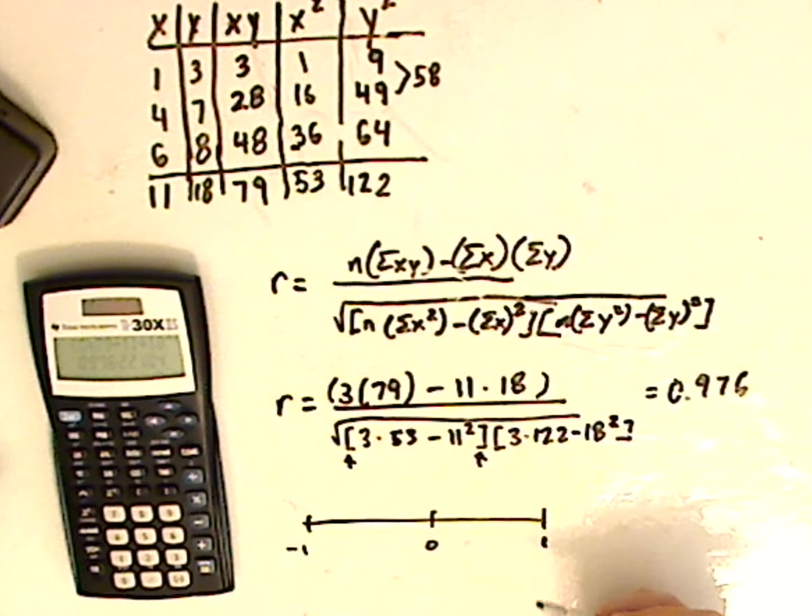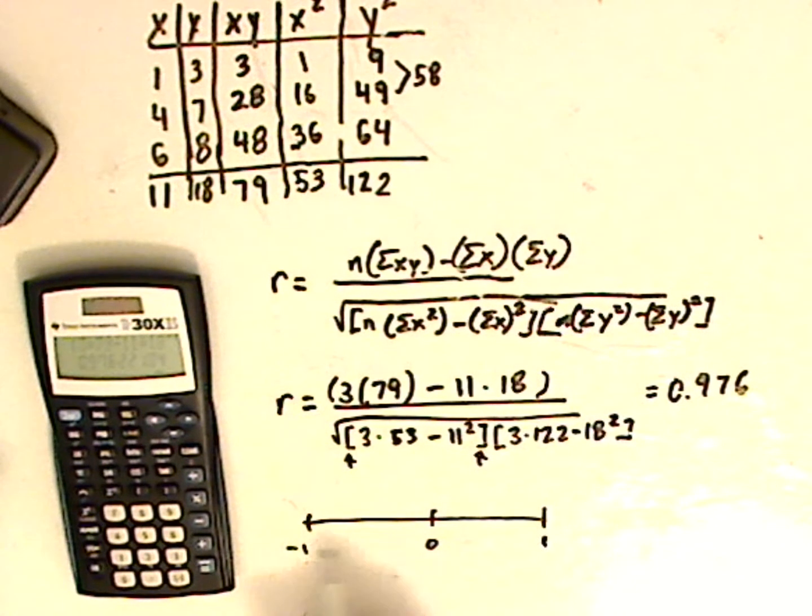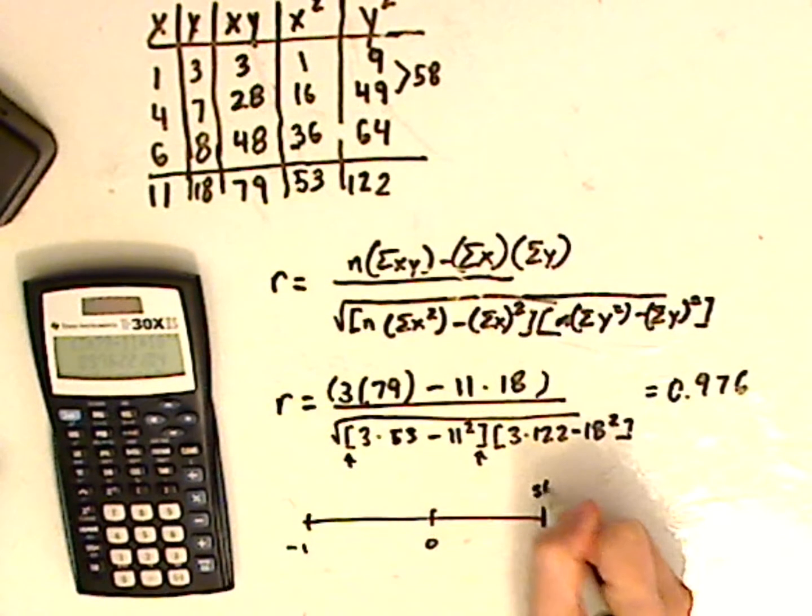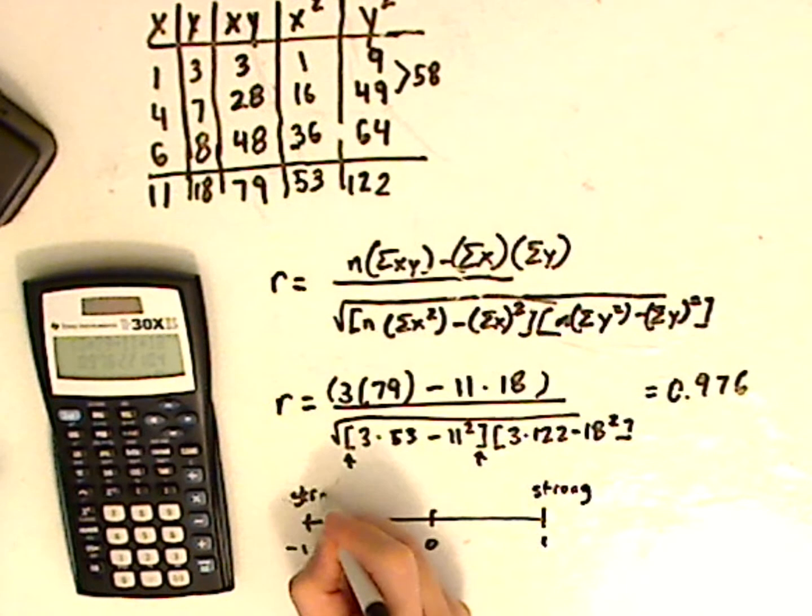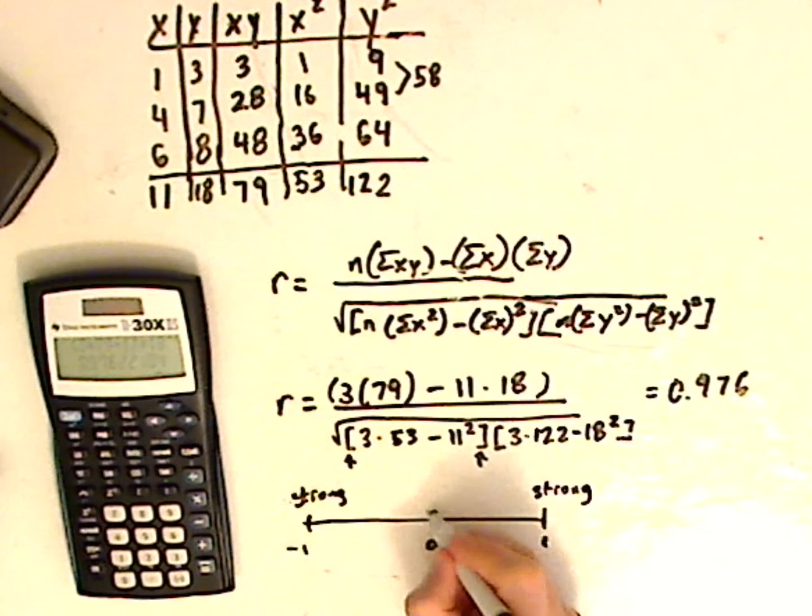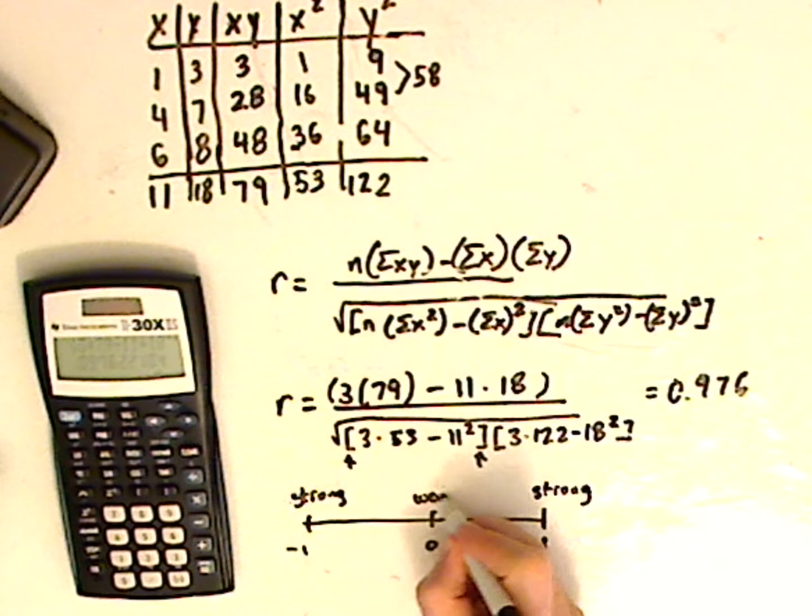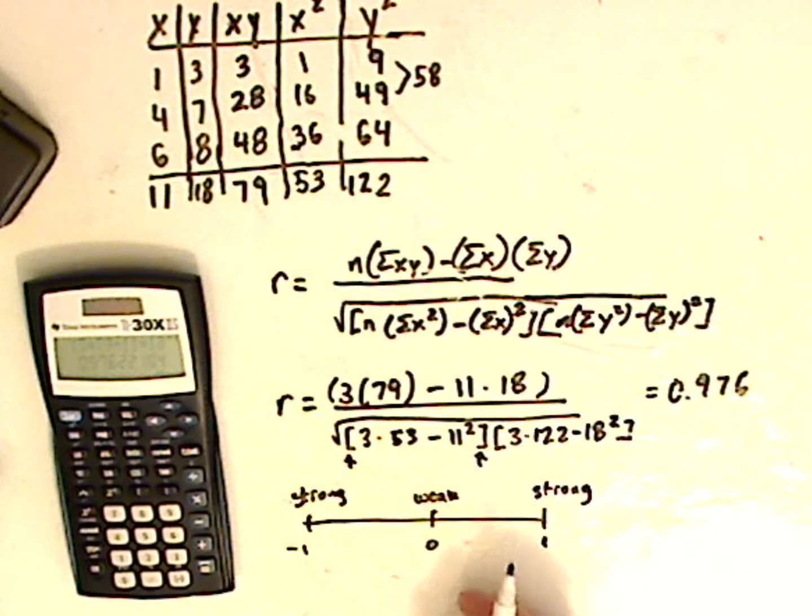In the middle there's 0, then you have negative 1, positive 1. The stronger it is to either negative 1 or positive 1, it's strong on either side. And in the center, it's weak. And it's talking about a linear relationship.